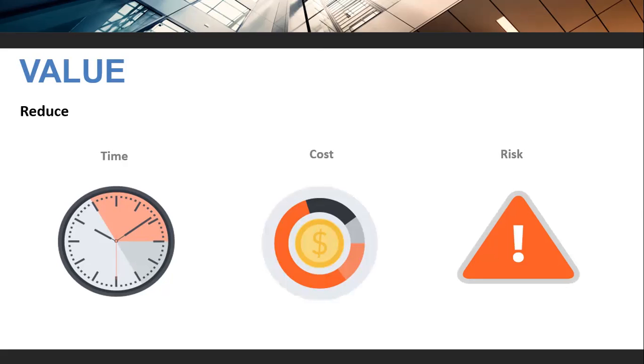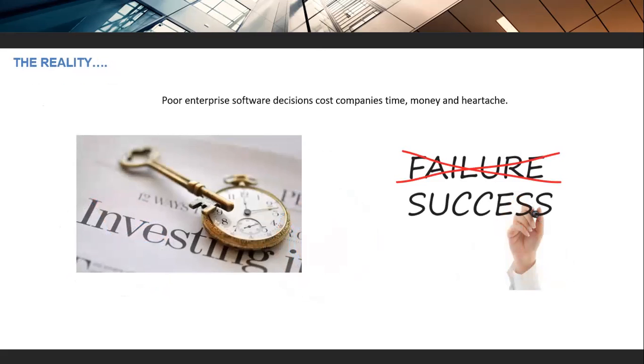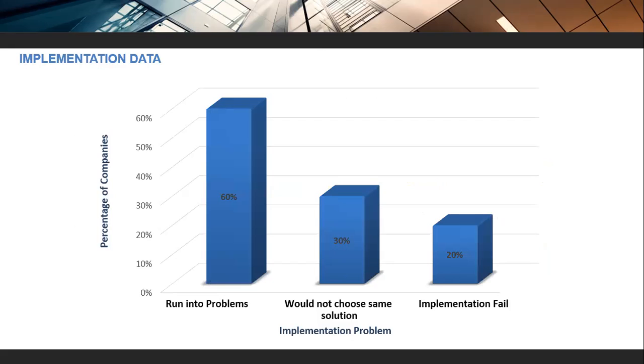We talked about poor enterprise software decisions. Sometimes companies don't do their diligent work and pass it to the supplier. But if you're selecting a bad system to run for the next five to ten years, you're paying money to get headaches and problems, becoming less effective. Poor enterprise software decisions cost companies time, money, and heartache.